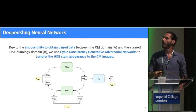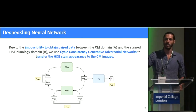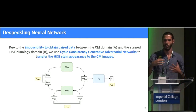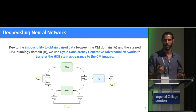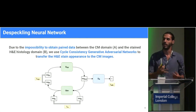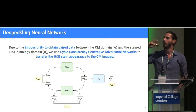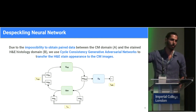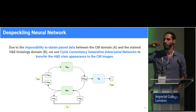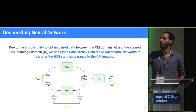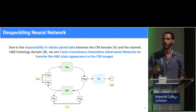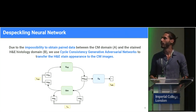Then we use a CycleGAN to combine the fluorescence mode and the denoised reflectance mode into the histology domain. We use a ResNet generator and a patch discriminator — if you want more details we can discuss it afterwards.